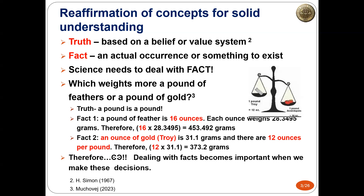Another fact: an ounce of gold, measured in the Troy system, is 31.10 grams. Not even an ounce is an ounce — there are 12 Troy ounces per Troy pound. 12 times 31.1 equals 373.2 grams. You can look this up in the Handbook of Chemistry or Physics — this is factual. Therefore, a pound of feathers weighs more than a pound of gold. We have to be careful about what we are looking at, because scientists need to deal with fact, and this becomes important when we make decisions.